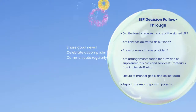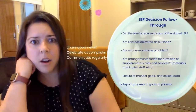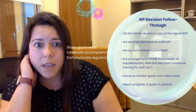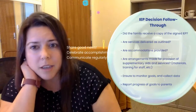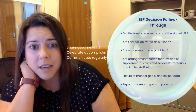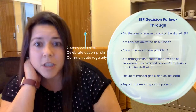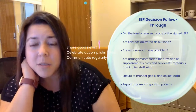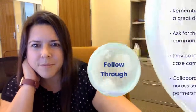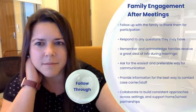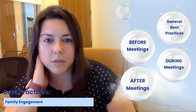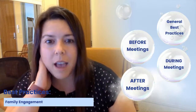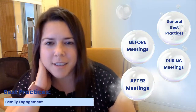Did the family receive a copy of the signed IEP? Are services being delivered as outlined? Are accommodations being provided? Are arrangements made for supplementary aids and services — meaning, are materials prepped and staff trained? Ensure you monitor goals, collect data, and report progress to parents. Be sure to share good news, celebrate accomplishments, and communicate regularly. These are the best practices you can apply before, during, and after meetings to best engage families. Have a great school year!